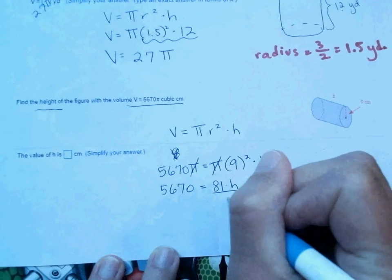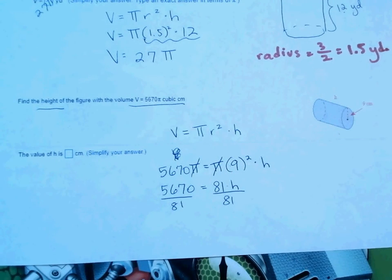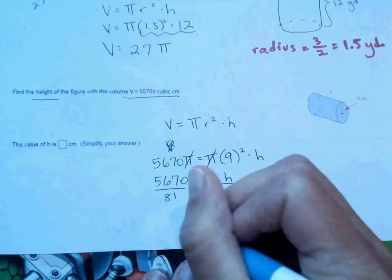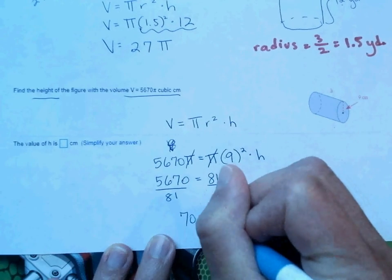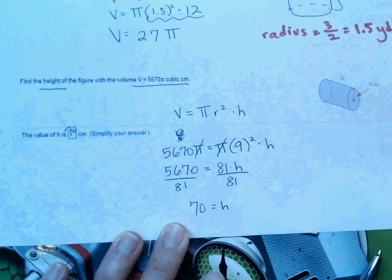And then you have to get h by itself, so we divide by 81. So 5,670 divided by 81 gives us 70 for our height. So 70 is centimeters.